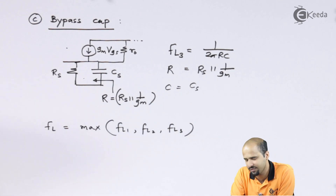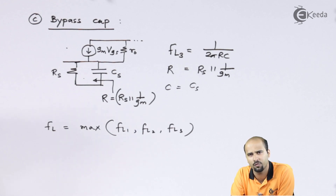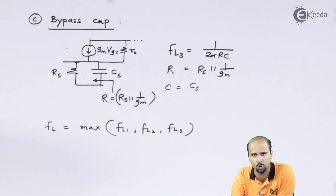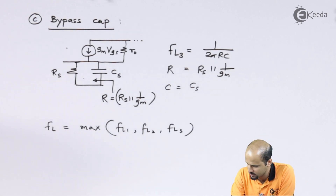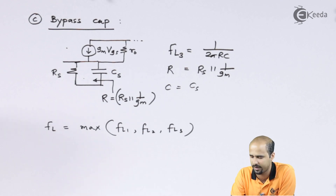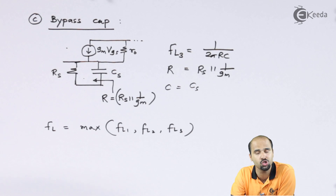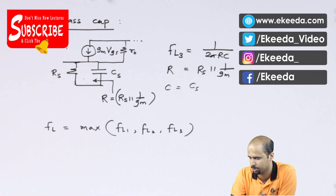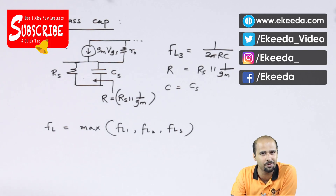Out of the three values of lower cutoff frequencies, we choose the one on the higher side as the actual lower cutoff frequency. For example, if FL2 is the highest, we pick FL2 and discard FL1 and FL3. This is how we understand the lower frequency response of a FET amplifier. In further videos, we will learn the combined two-stage frequency response and see how the analysis becomes more complex. Stay tuned and keep learning with me. Thank you so much.